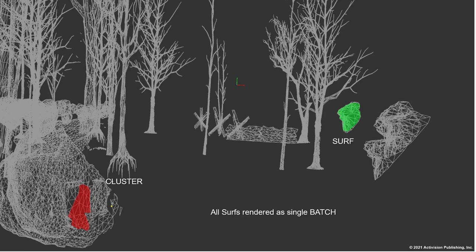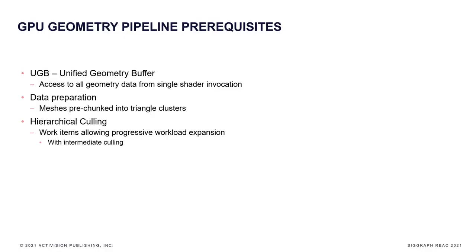Before jumping into implementation, I'd like to explain some basic terminology of our engine. Our rendering primitives are divided into hierarchical classes. A Batch is a single invocation of a rendering API draw — DrawIndirect or DrawIndirectIndex — composed of many Surfs. A Surf points to different parts of meshes, split based on non-mergeable material splits, and composed of many Clusters. A Cluster is basically a 64-triangle strip. To implement a full GPU-driven pipeline, we had to allow access to all geometry data from a single shader invocation via systems called UGB (Unified Geometry Buffers), provide meshes as unified pre-generated triangle clusters, and divide all work units into hierarchies allowing progressive workload expansion with interstage culling.